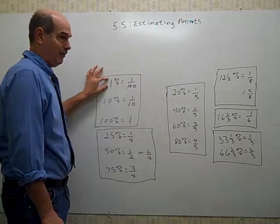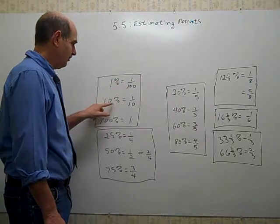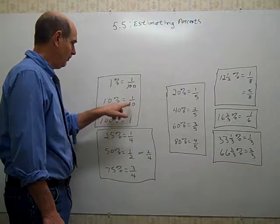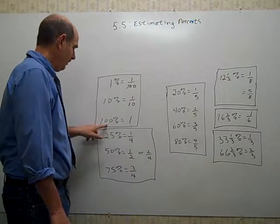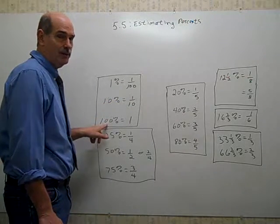1% means out of 100, 1 out of 100. 10% is 10 out of 100, which reduces to 1 tenth. 100% is 100 out of 100, which is 1.